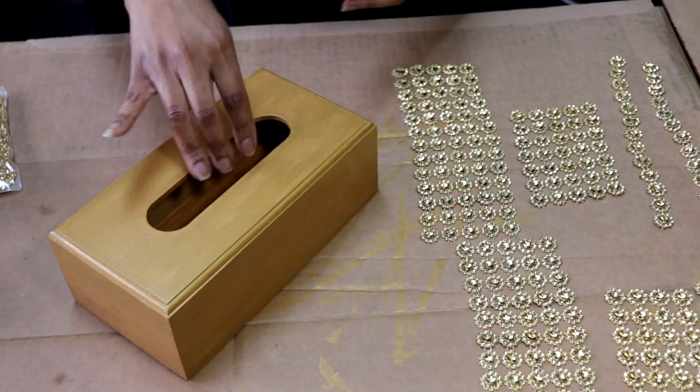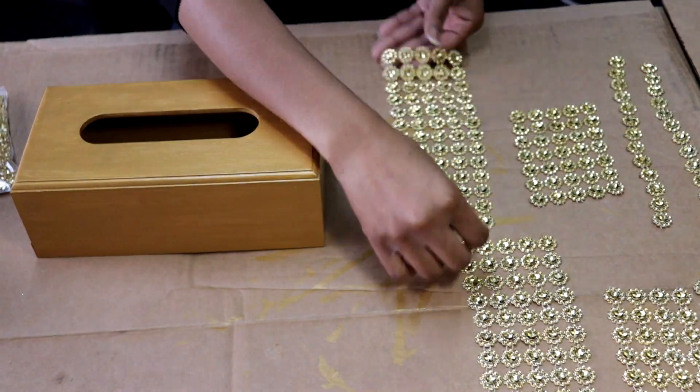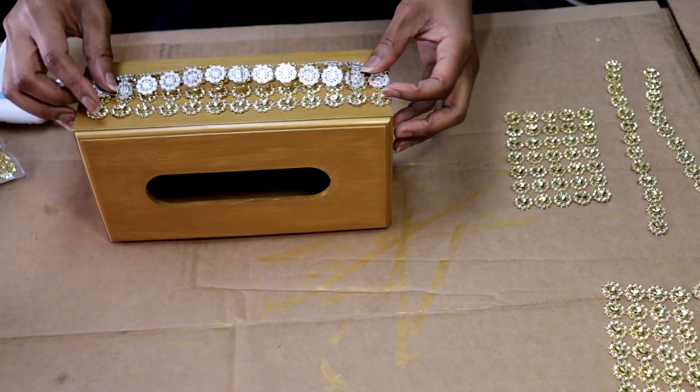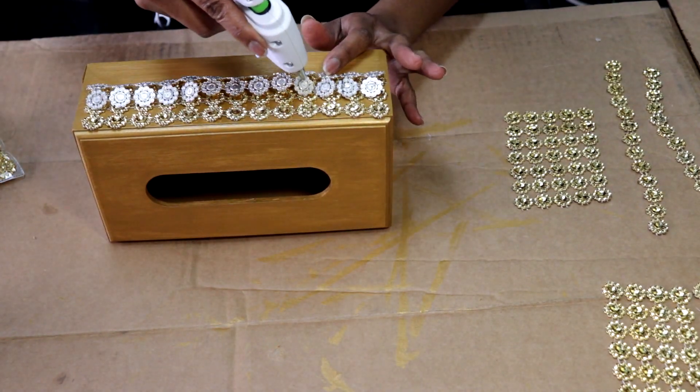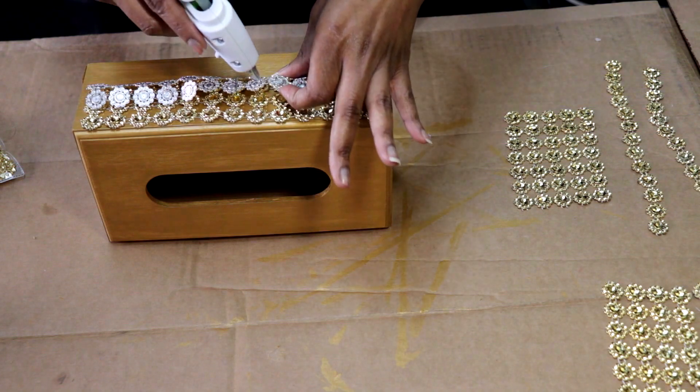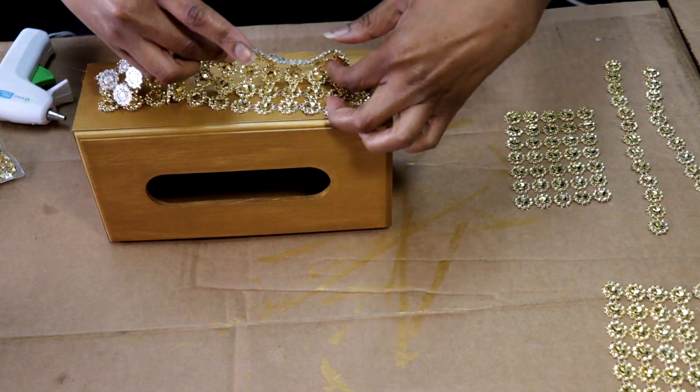Then I grabbed my rhinestone ribbons, measured and pre-cut them based on the measurement of the tissue box, then grabbed my glue gun and applied the glue on a few of the rhinestones to attach it.